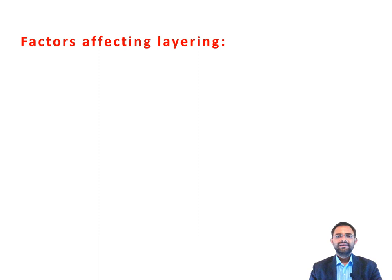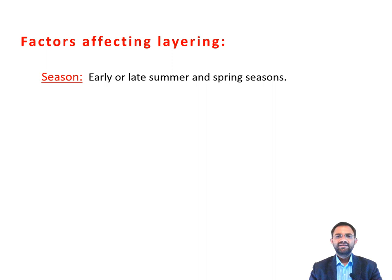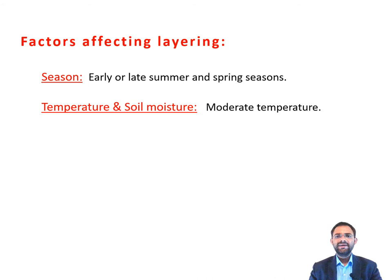Now the factors affecting layering. There are a number of factors which may affect the techniques of layering. The first one is season — early or late summer and spring seasons are favorable for layering techniques. The next one is temperature and soil moisture. Moderate temperatures are favorable for layering techniques. High atmospheric temperature of the upper strata of soil reduces its moisture content and both these factors together inhibit the initiation and development of roots as well as of shoots on layers.